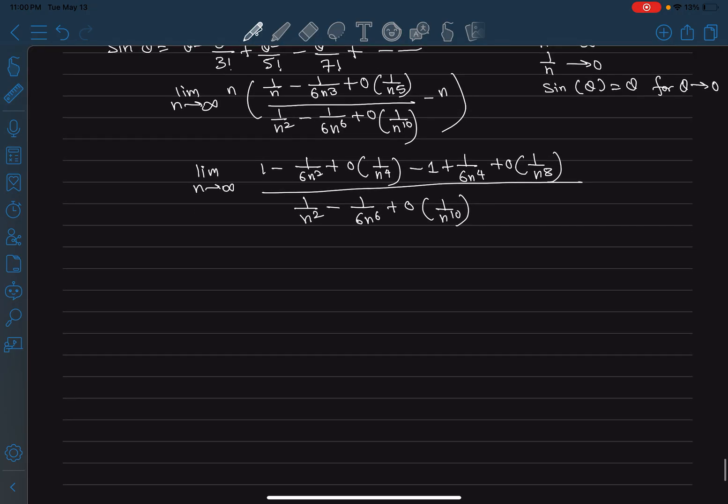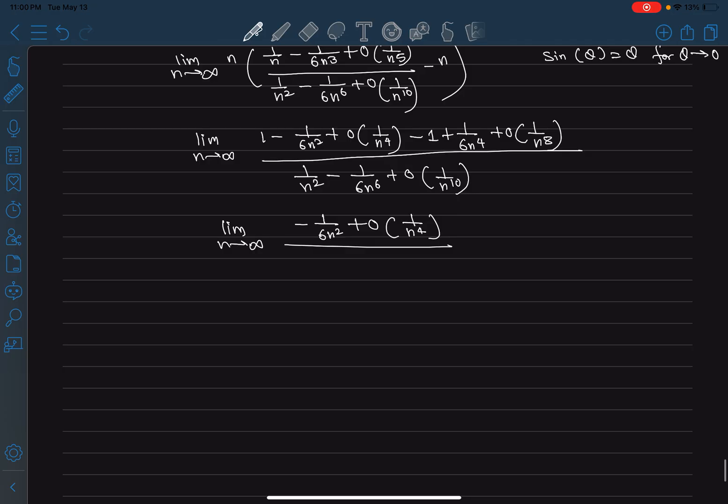So here 1 cancels out, we get limit n goes to infinity of minus 1 by 6 n square, and then this other term is of order of 1 by n to the power 4, so I can just write this whole thing as order of 1 by n to the power 4. Now this is just 1 by n square, and second I can write this is order of 1 by n to the power 6.